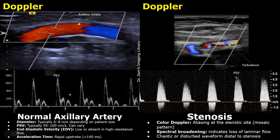This small tip below the baseline is a small flow reversal for a very short time during early diastole. The end diastole will be at this point. End diastolic velocity can be low or absent in the axillary artery. The acceleration time is usually less than 140 ms, a rapid upstroke.